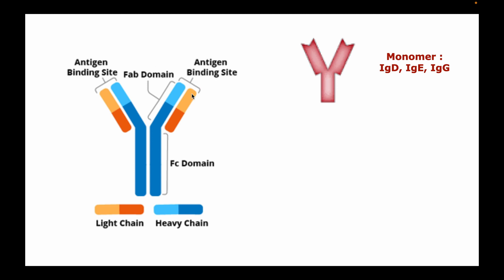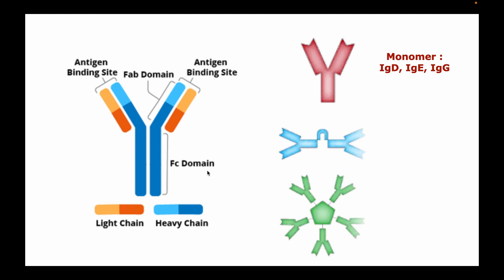The two arms of the Y monomer are referred to as the antigen binding sites, or the FAB portion or domain of the antibody, and these provide specificity for binding of an antigen. The FC domain becomes biologically active only after the antigen binding site has bound to its corresponding antigen, enabling activities such as activating complement pathways and binding to receptors on phagocytes and other defense cells to promote adaptive immunity.